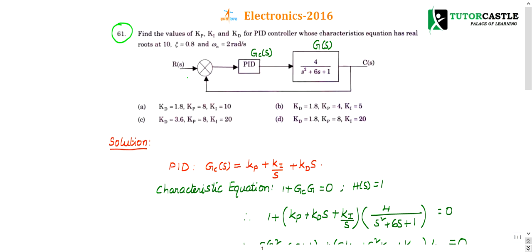The PID controller Gc(s) is connected in series with G(s), which is given as 4 divided by (s² + 6s + 1). The transfer function of the PID controller is: Gc(s) = Kp + Ki/s + Kd·s. Here, Kp is the proportional controller (a constant), Kd·s is the derivative controller (multiplication by s), and Ki/s is the integral controller (division by s).